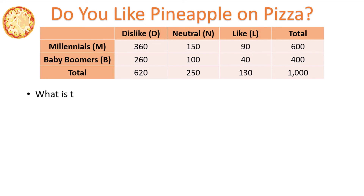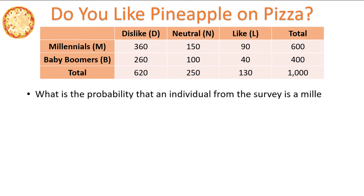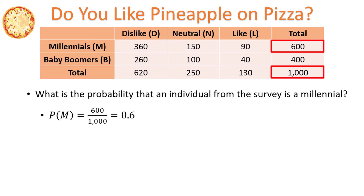For example, what is the probability that an individual from the survey is a Millennial? If we look at our table, we see that there are 600 Millennials out of the total of 1,000 individuals surveyed. So 600 out of 1,000 is equal to 0.6 — that is the probability that an individual from the survey is a Millennial.